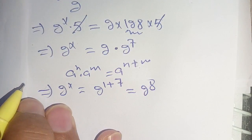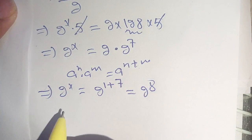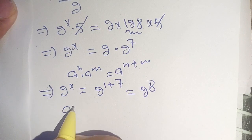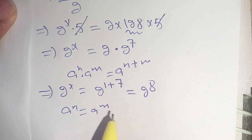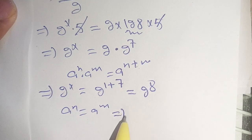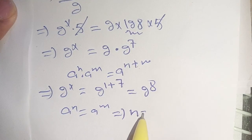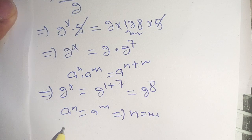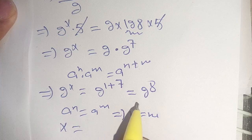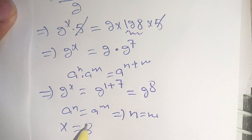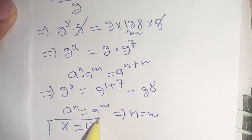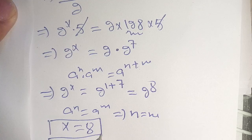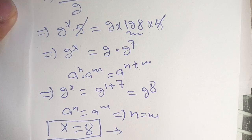Now it is in the form of a raised to power n equals a raised to power m, which implies n is equal to m. Here n is equal to x and m is equal to 8. Thus x is equal to 8, which is the required value satisfying this exponential equation.